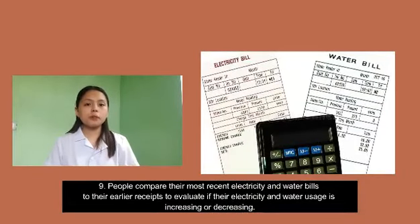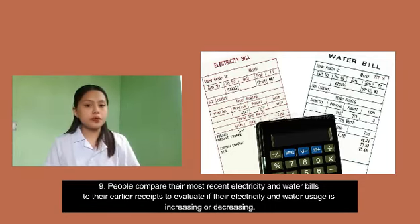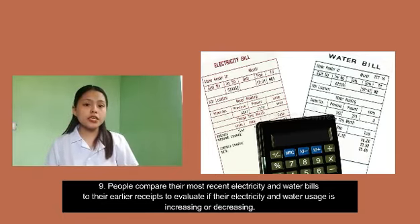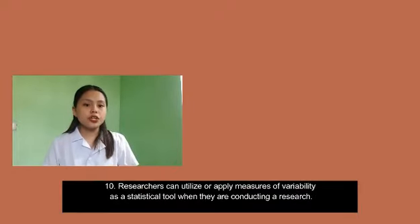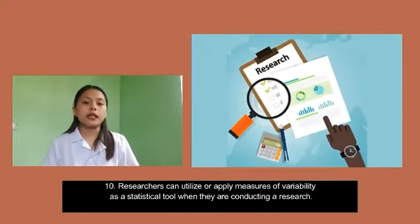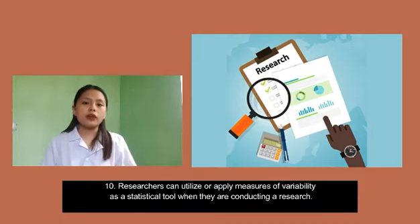Number 9: People compare their most recent electricity and water bills to their earlier receipts to evaluate if their electricity and water usage is increasing or decreasing. And last, number 10: Researchers can utilize or apply measures of variability as a statistical tool when they are conducting research.